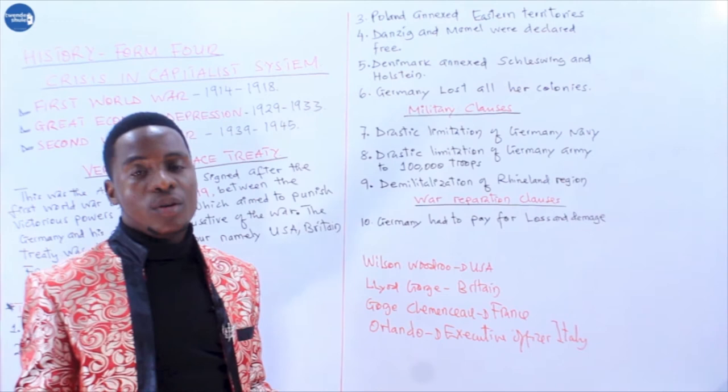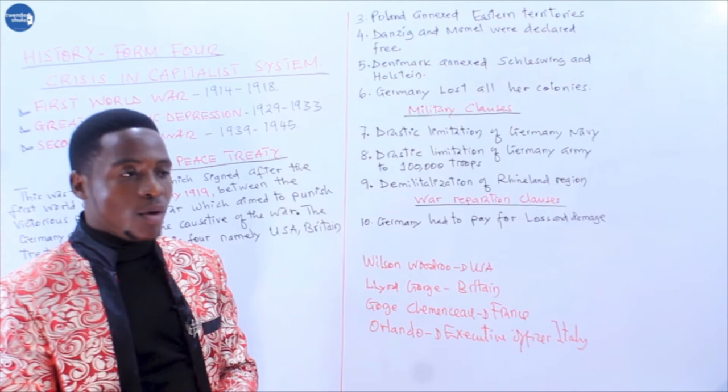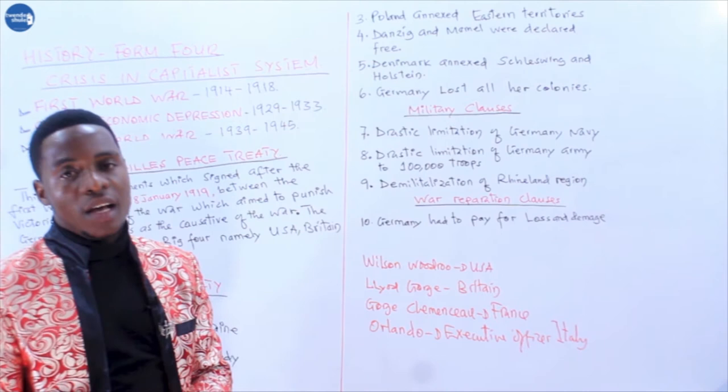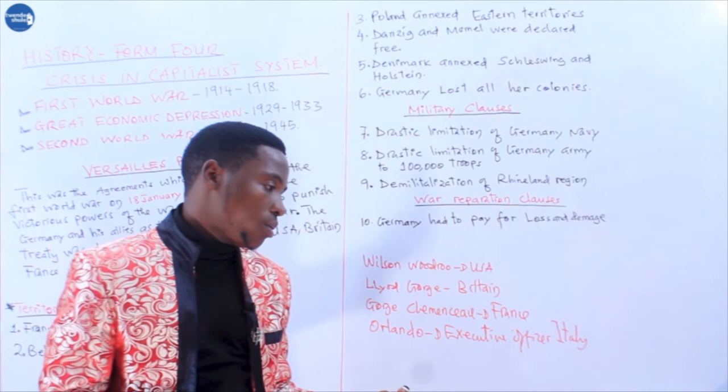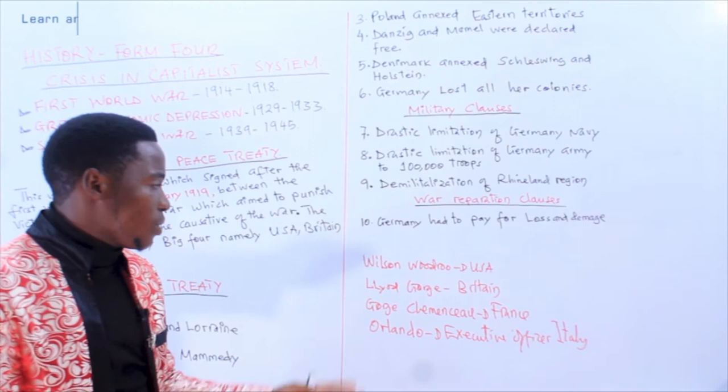Orlando from Italy attended with the mission to regain territory, because Italy had been promised since 1915 that when it withdrew from the Triple Alliance and joined the Entente, after the war they would redistribute territory and Italy would be given land. So Orlando attended the meeting so that Italy might gain territory, either in Africa or other parts of the world. So each leader had their own mission.